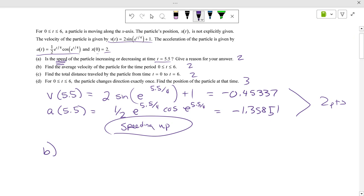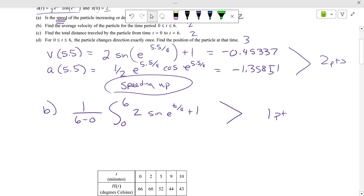Average velocity, we just worked on this. Average, the average value of a function. How do we do average value of a function? 1 over 6 minus 0, the integral from 0 to 6 of the velocity function, 2 sine of e to the t over 4 plus 1. If you write this down, it's one point. You don't even have to know how to solve it. If you solve it, you get 1.949. This is worth one point.